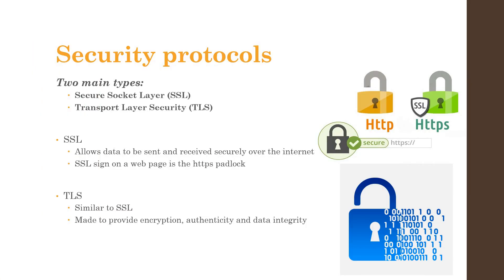There are two main types of security protocols: SSL and TLS. SSL stands for Secure Socket Layer — it allows data to be sent and received securely over the internet. The SSL sign on a webpage is the HTTPS padlock. TLS stands for Transport Layer Security. This is similar to SSL and is made to provide encryption, authenticity, and data integrity.